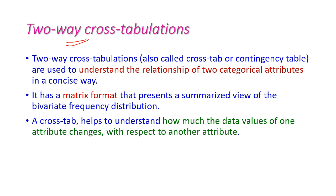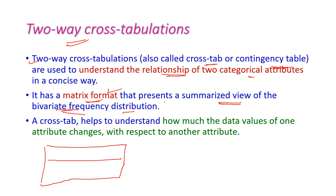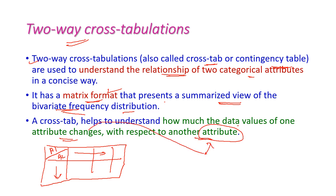The second type is two-way cross-tabulation, also called cross-tab or contingency table. This two-way cross-tabulation is used to understand the relationship between two categorical attributes. The tabulation is in matrix format, representing a summarized view of bivariate frequency distribution. In this table format, one attribute is placed row-wise and another attribute column-wise. From this table we can easily understand how much data values of one attribute change with respect to another attribute.